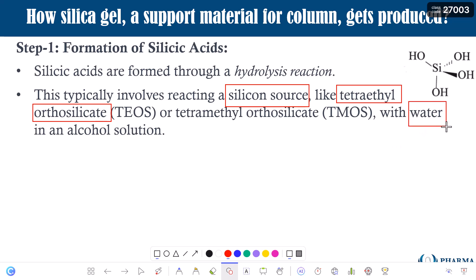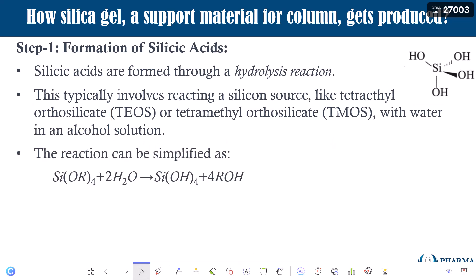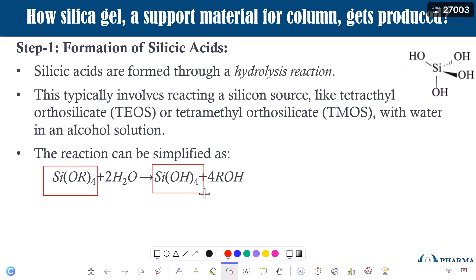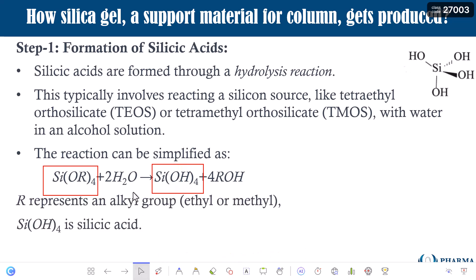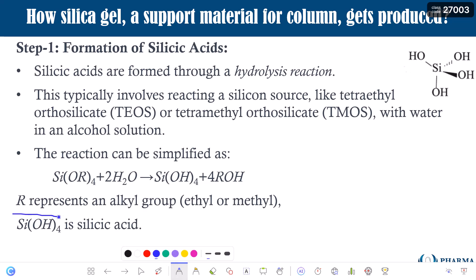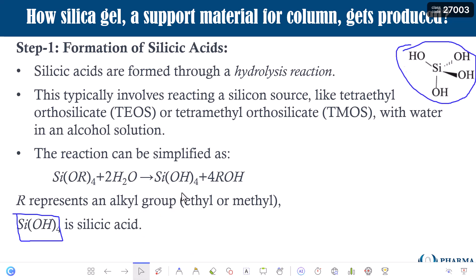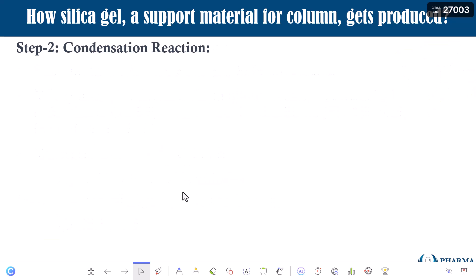Water becomes the source of hydrolysis in an alcoholic solution. The reaction can be represented as: Si(OR)₄ + water → silicic acid. Here R denotes the alkyl group like ethyl or methyl, and Si(OR)₄ represents the silicon source. The product, Si(OH)₄, represents the silicic acid, and its structure can be found on the top right side of your screen.